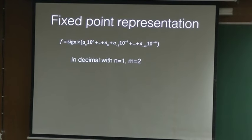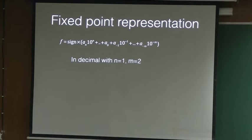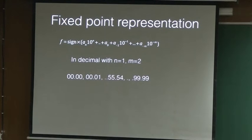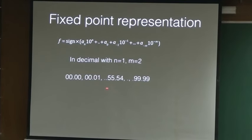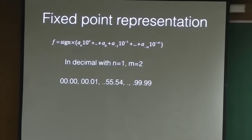Let us do an example. In a decimal number if n equals 1 and m equals 2, what numbers can I represent? I am limited. If I just have this then I cannot represent all numbers - I have a very limited set. I am focusing only on positive numbers. So, 0.00 - m is 2, these are the two digits and n equals 1, so I can go up to 99. These are the numbers - very limited. What is the spacing between two numbers?